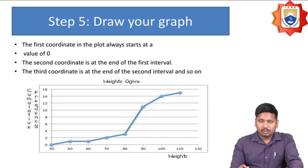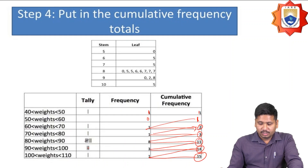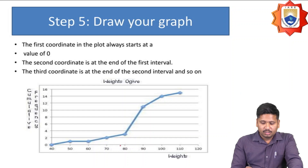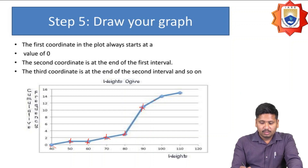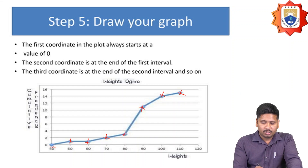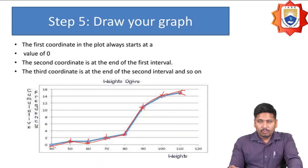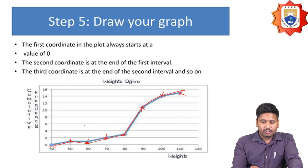Based on cumulative frequency, draw the Ogive. Plot points at upper class boundaries: at 50 it is 1, at 60 it is 1, at 70 it is 1, at 80 it is 2, at 90 it is 11, at 100 it is 14, at 110 it is 15. Join all the points with a line — that is the Ogive graph. Always start with 0, the second coordinate is at the end of the first interval, and each subsequent coordinate is at the end of the next interval.